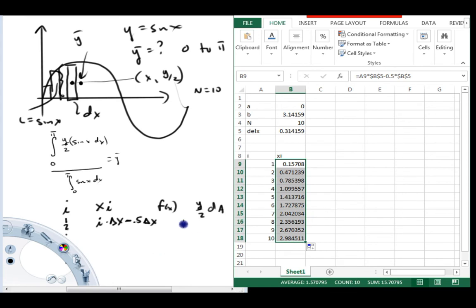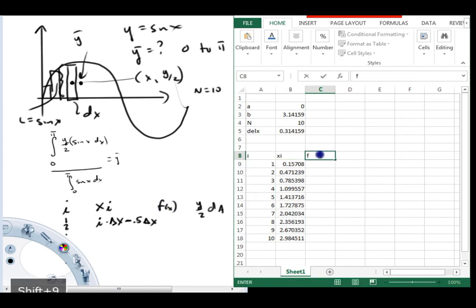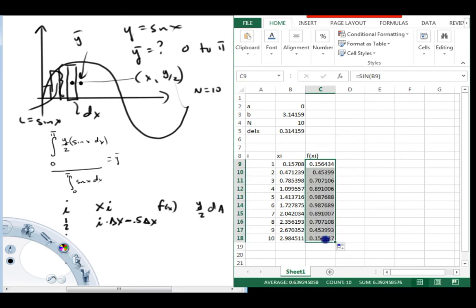Now we're going to need function values. So I'm going to go ahead and label this F of x sub i is equal to sine of this. Now if we did this one right, it should start small, go close to one, get small again. So you can see here right in that pi over two type of region, there's where our sine is the largest.